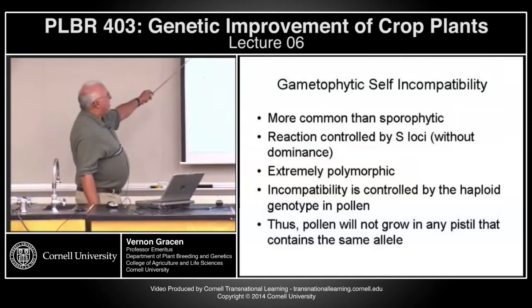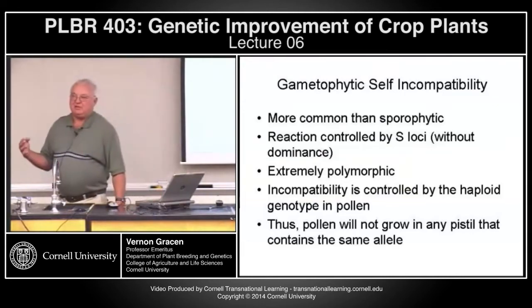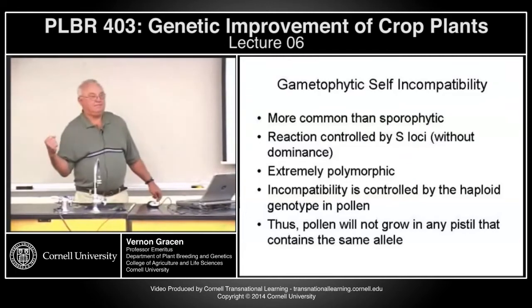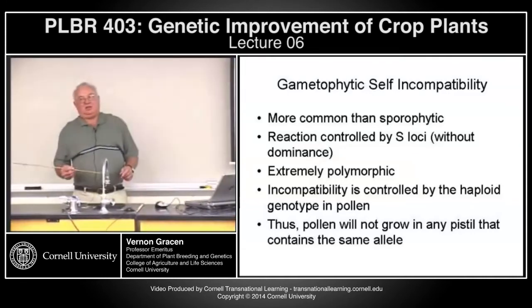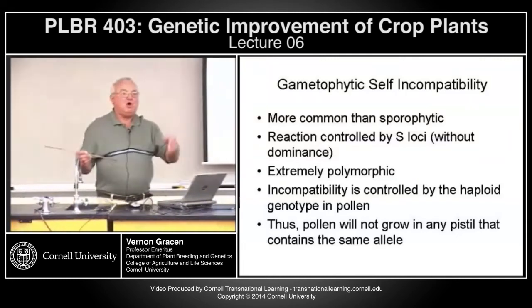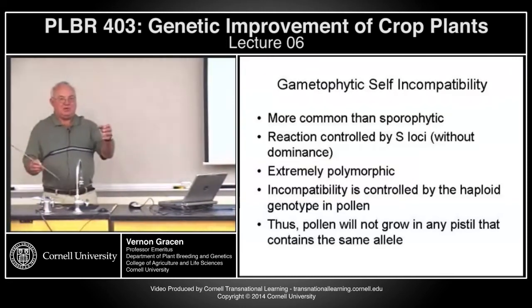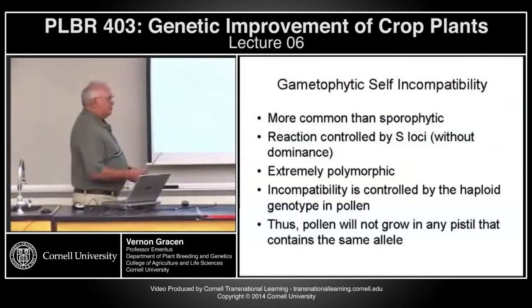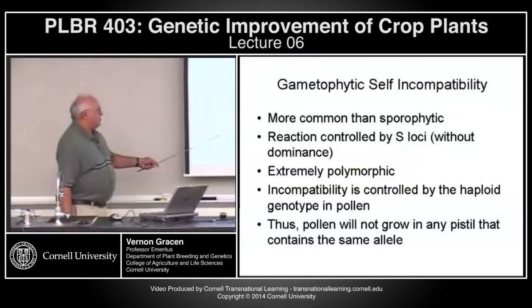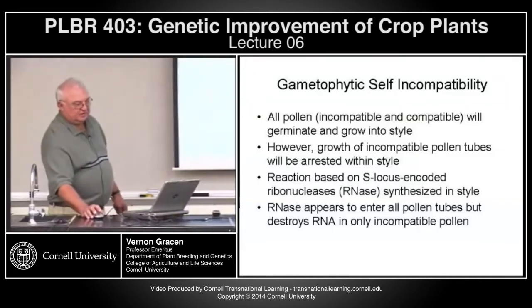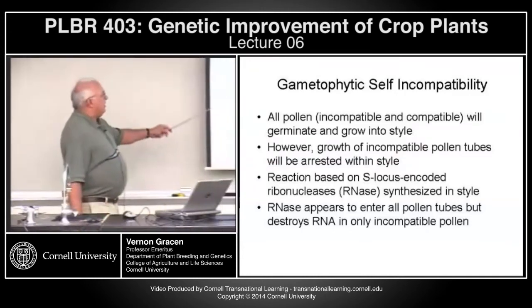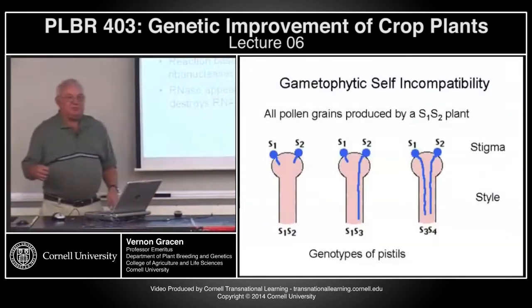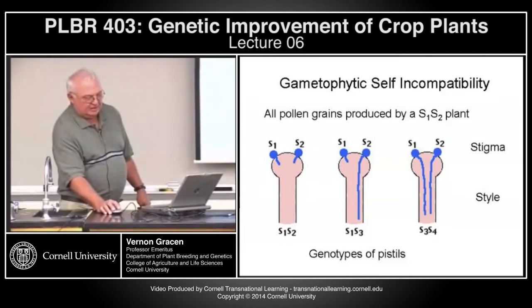Gametophytic incompatibility is more common. The reaction is controlled by S loci without dominance. This is because the incompatibility reaction is controlled by the haploid genotype in the pollen — each pollen grain has only one allele, so there is no way to have a dominance relationship between two alleles at the same locus. Pollen will not grow in any pistil containing the same allele that the individual pollen grain contains. All pollen usually germinates and grows into the style, but incompatible pollen growth is arrested by RNA enzymes that seek out and destroy incompatible pollen tubes.